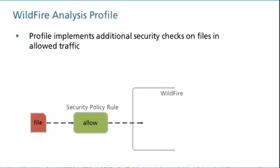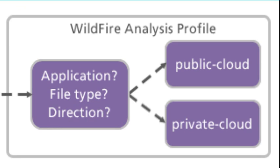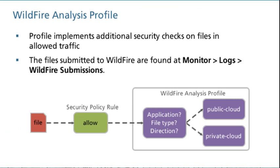Wildfire analysis profiles are objects that are added to security policy rules that are configured with an action of Allow. Wildfire analysis profiles are not necessary for security policy rules configured with the Deny action because no further processing is needed if the network traffic will be blocked. As with security policy rules, Wildfire analysis profiles are applied to all packets over the life of a session. The Wildfire analysis profiles represent additional security checks to be performed on files in allowed network traffic and enable you to have more granular control over allowed traffic. For example, you can configure a firewall to submit files to Wildfire only when they match specific file types and are transferred in a specific direction by a specific application. The files submitted to Wildfire are logged at Monitor > Logs > Wildfire Submissions.